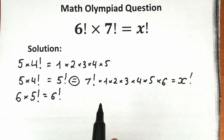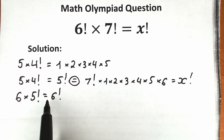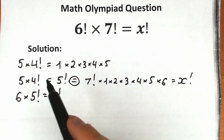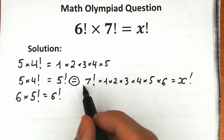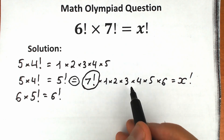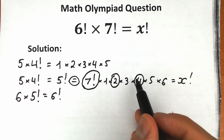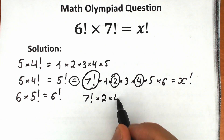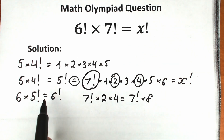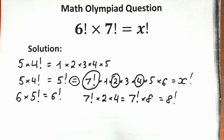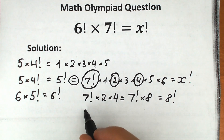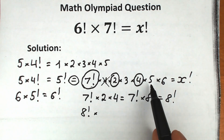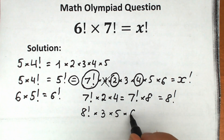As noted before, if we multiply 5 factorial by 6, we get 6 factorial. Right here we have 7 factorial, so let's find the next step: multiply 7 factorial by 8 to get 8 factorial. We don't have an 8 directly, but we have 2 times 4. So 7 factorial times 2 times 4 equals 7 factorial times 8, which equals 8 factorial. Instead of those three values, we write 8 factorial. We can cancel the 1, and we're left with 8 factorial times 3 times 5 times 6, equal to x factorial.